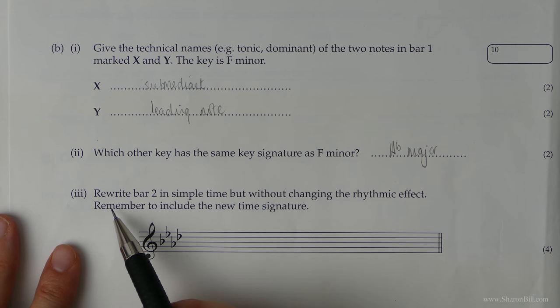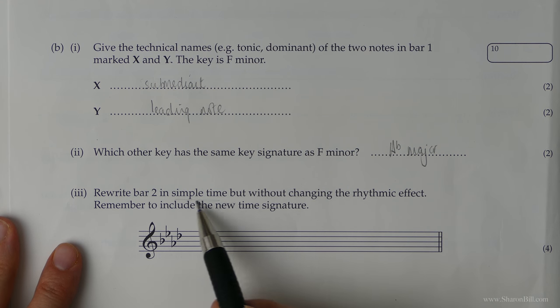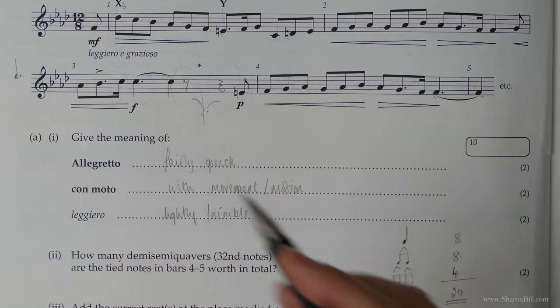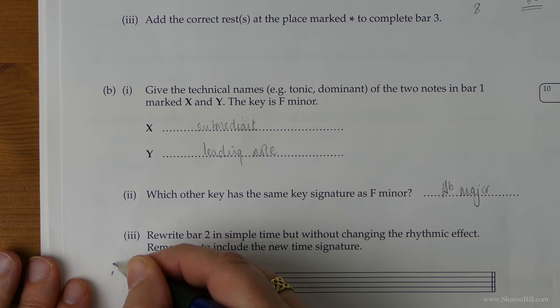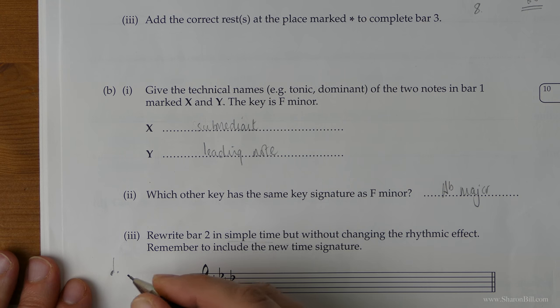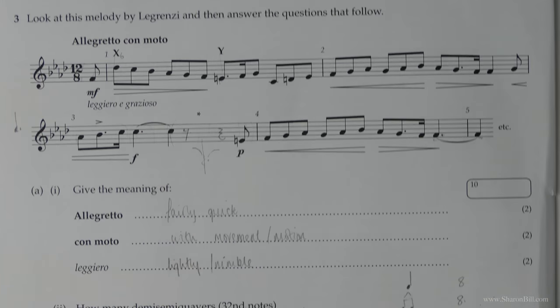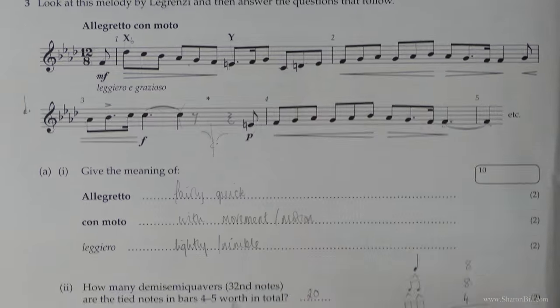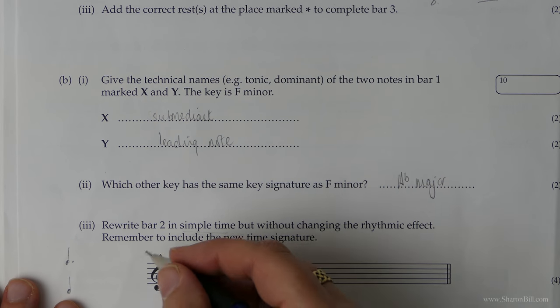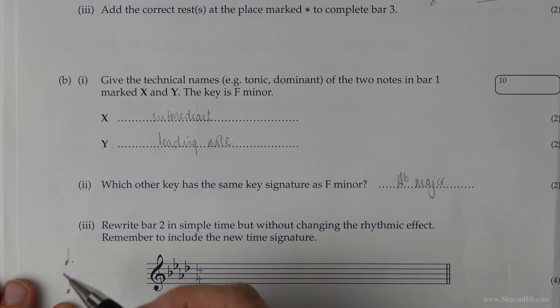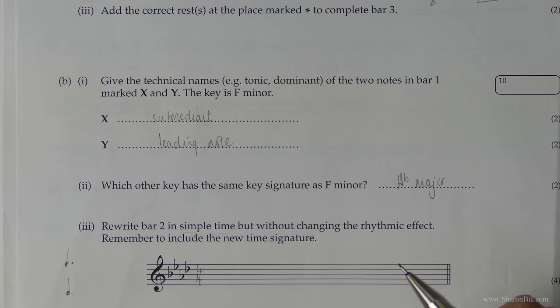Last little bit here. Rewrite bar two in simple time but without changing the rhythmic effect. So we're going from compound time to simple time, which means we're going from groups of three quaver beats or eighth notes to groups of two. Now at the moment this is four groups of three. And so we need to go to four groups of two. And so that time signature will be four-four here.